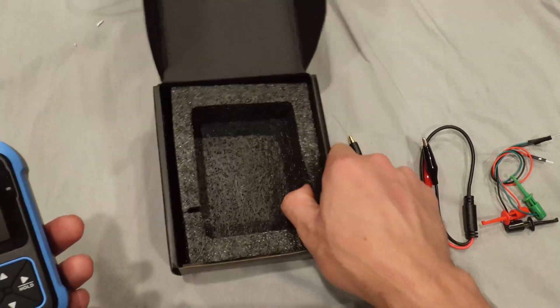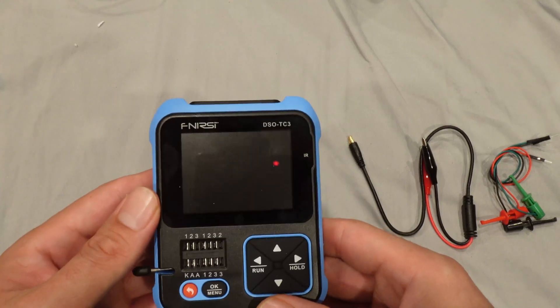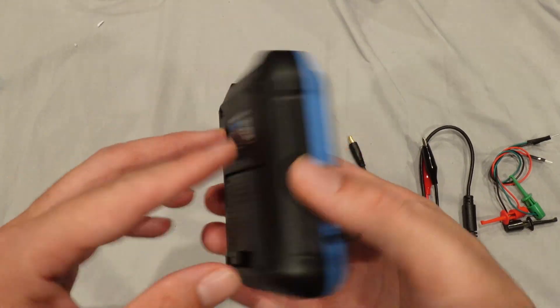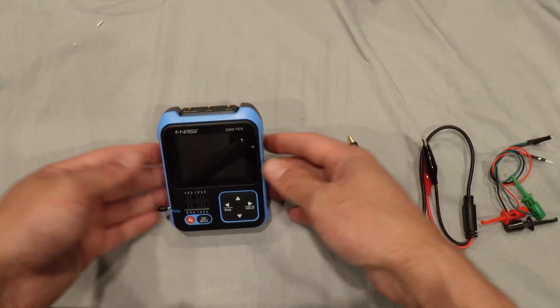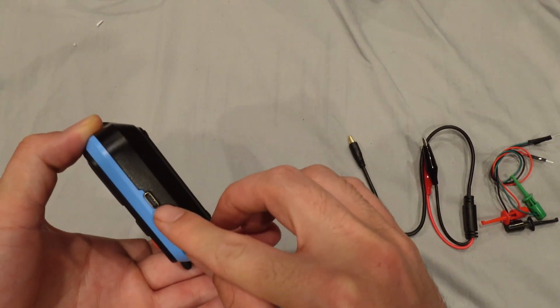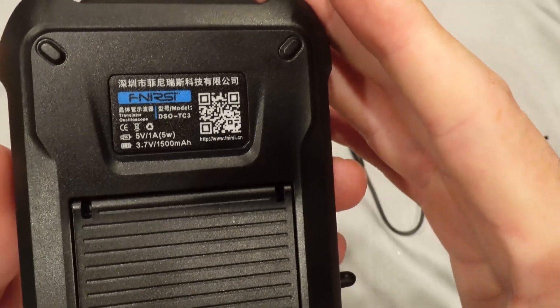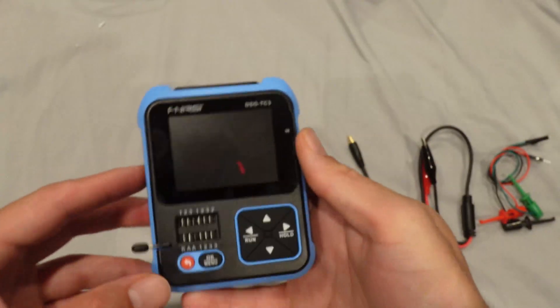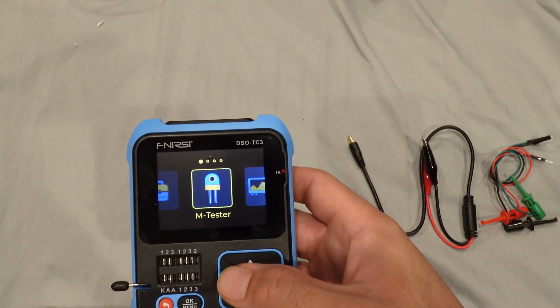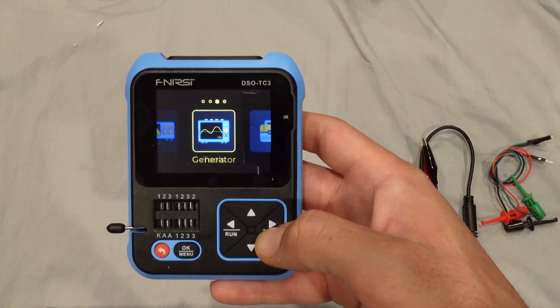And finally the oscilloscope and generator itself. Nice packaging. So what we have here is a 2.4 inch TFT screen and it has a kickstand. It has a reset button right there and it charges with USB. It has a 1500 milliamp lithium battery. Let's turn this on.